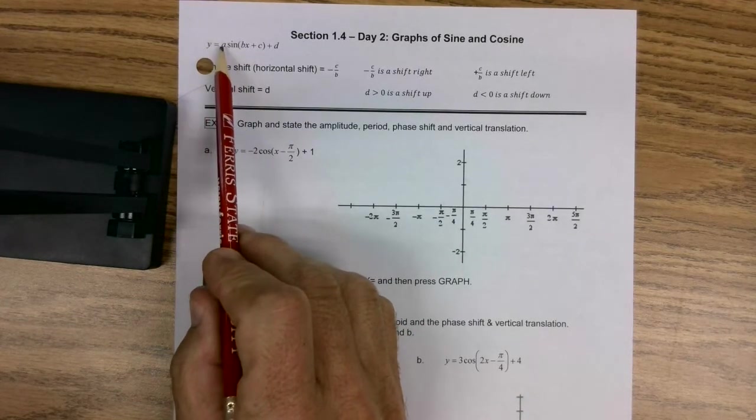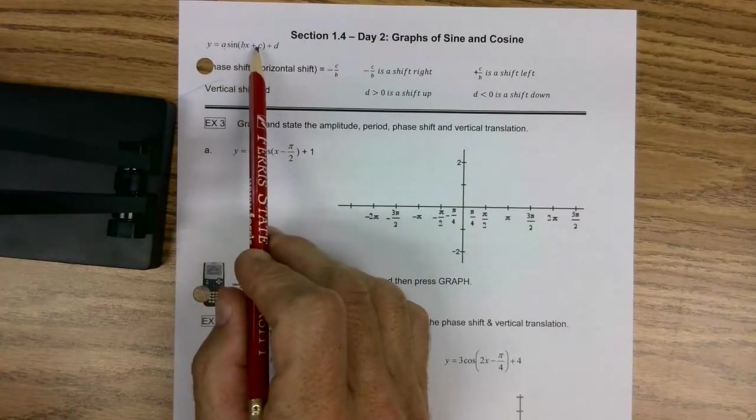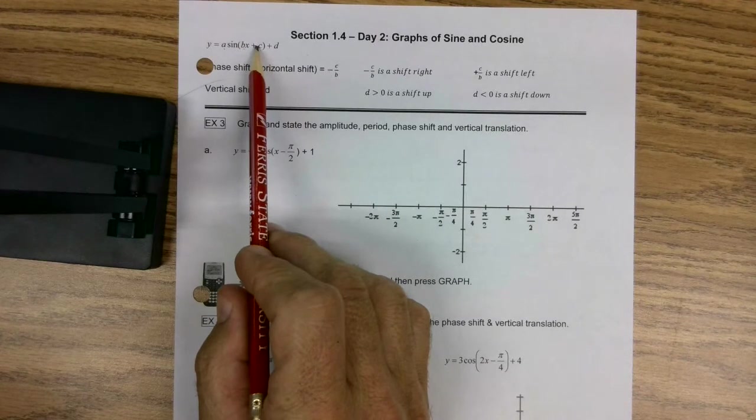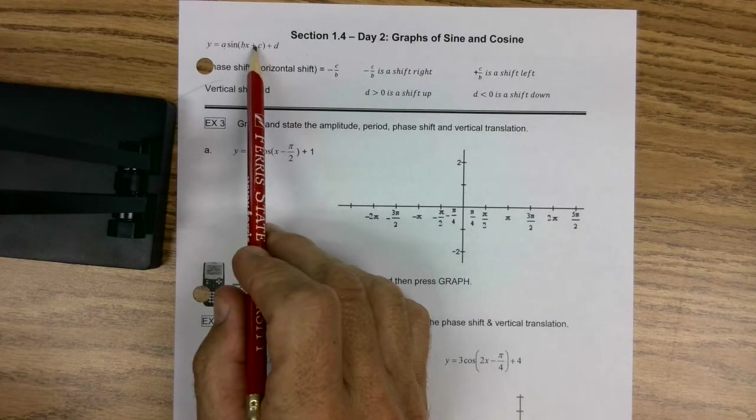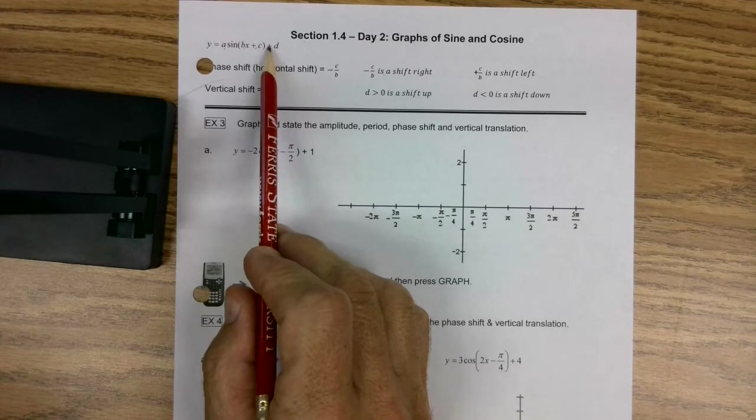So if you watch the pre-lesson, A is amplitude, B affects the period, C, if this is plus moves it left, if it's minus moves it right, and D just flat out, if it's plus it's up, if it's negative it's down.